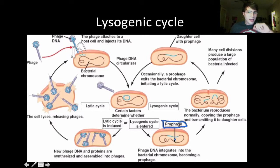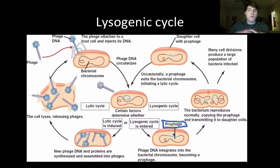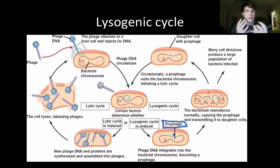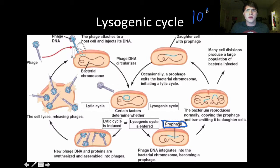As a prophage, the viral DNA is not transcriptionally active — it just stays there. As the bacterium replicates its DNA, it replicates the prophage DNA along with it, having no means of distinguishing between the two. This is rare, occurring in only about 10% of all phage viruses we know of.